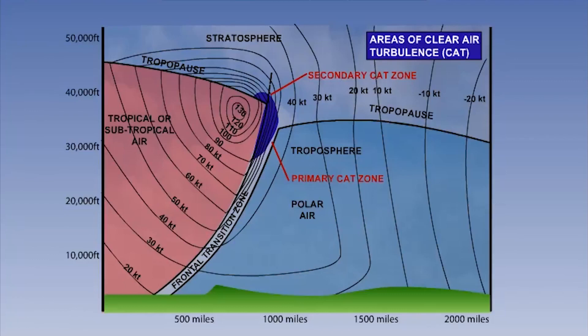Notice the speed in the center and more importantly, notice how close the isotacks are on the cold side of the jet. This shows the rapid change in speed and is where the clear air turbulence is most likely to be found.